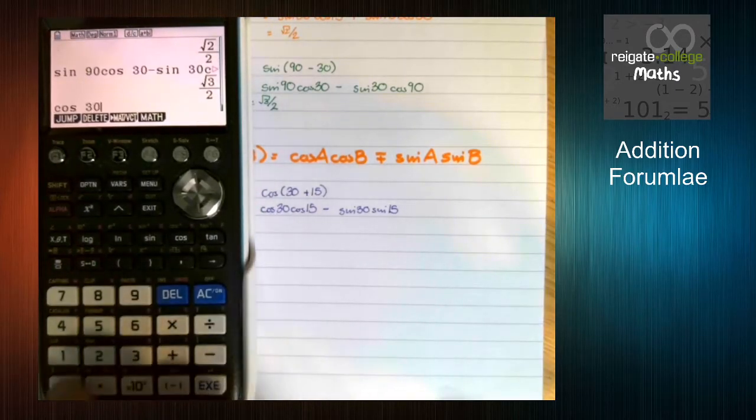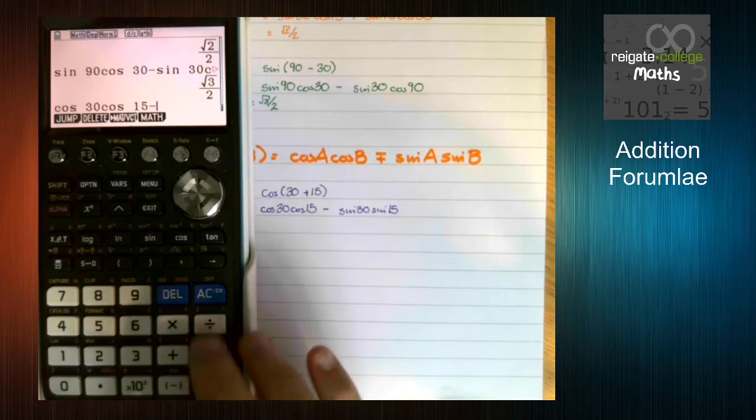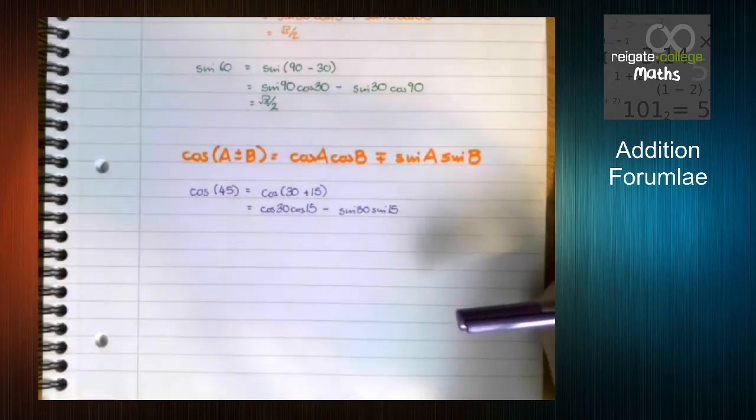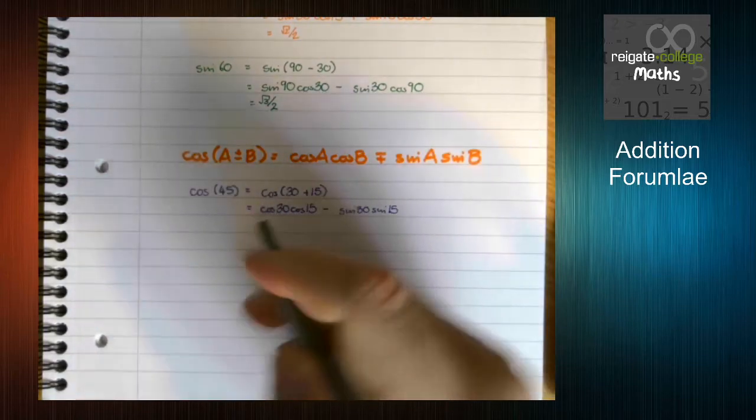Which again we can do on our calculator to check that everything's going fine. So we've got cos 30 cos 15 minus sine 30 sine 15, and we can see again that's the root 2 of a 2 that we expected.